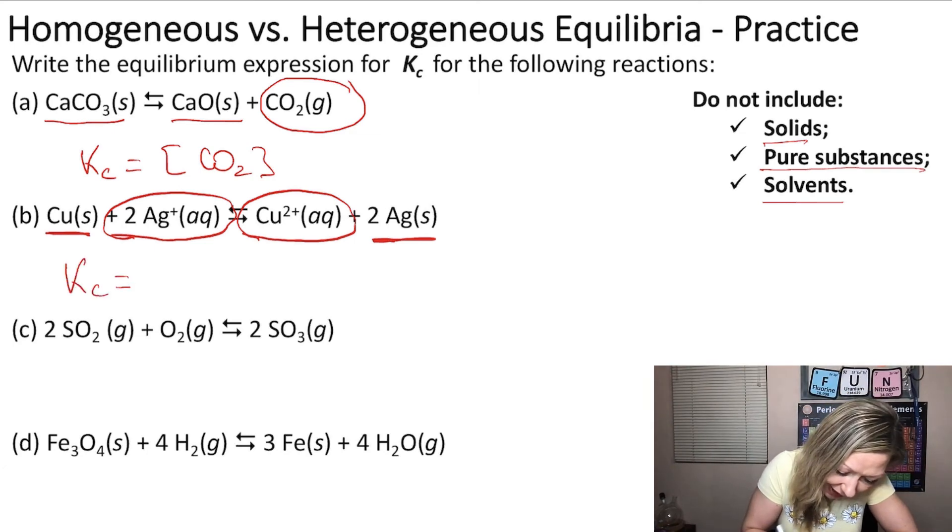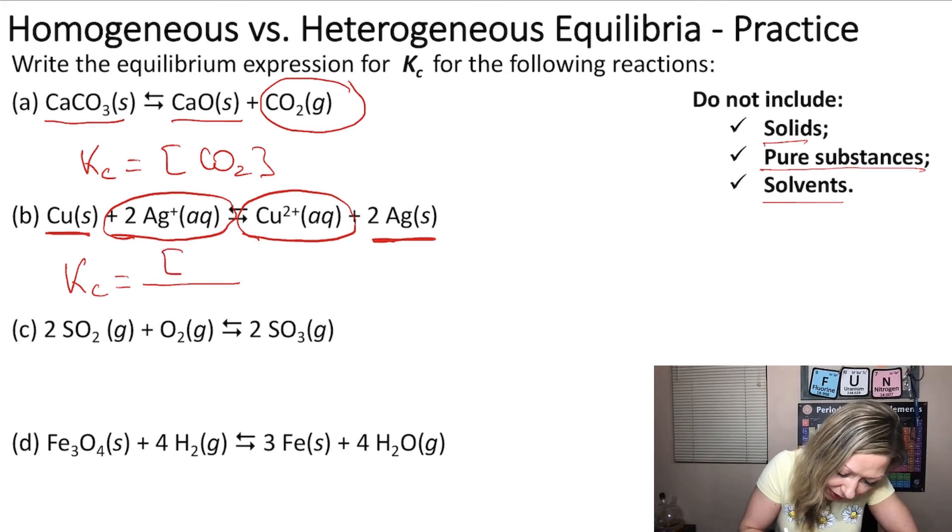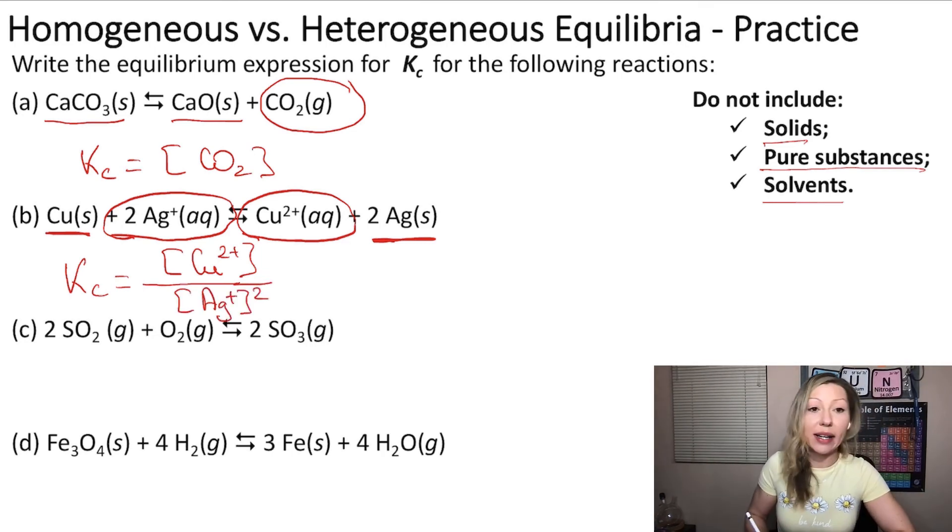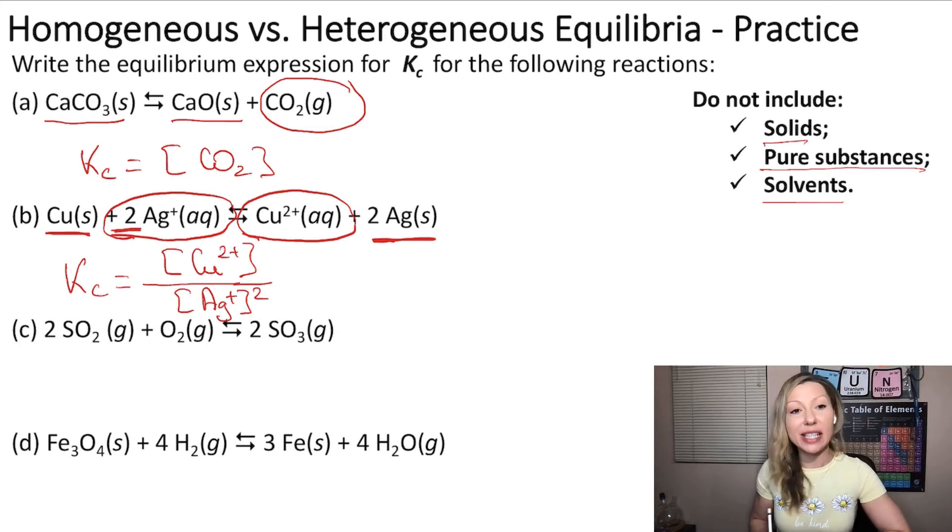So Kc, in this case, we always start with the products, equals to the concentration of Cu2+ divided by the concentration of Ag+ squared, because of this stoichiometric coefficient in the reaction.